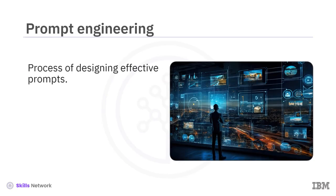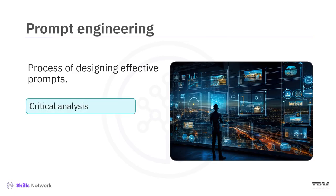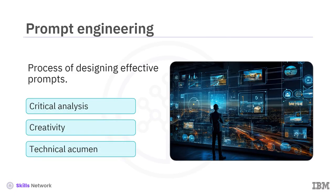The process of designing effective prompts to generate better and desired responses is called prompt engineering. Although generative AI models have the potential to supplement human creativity, if you fail to provide precise prompts, these models may produce inadequate results and even false and misleading information. Prompt engineering is a blend of critical analysis, creativity, and technical acumen. It is not limited to asking the right question — it includes framing the question in the right context with the right information and your expectation of desired outcomes to elicit the most appropriate response.